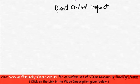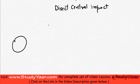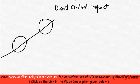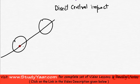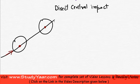Now let's analyze direct central impact. So in direct central impact, if these are my two bodies who are colliding and this is my line of impact, then direct central impact is going to be an impact in which your center of gravity is in the line of action and your velocity is also along the line of action.